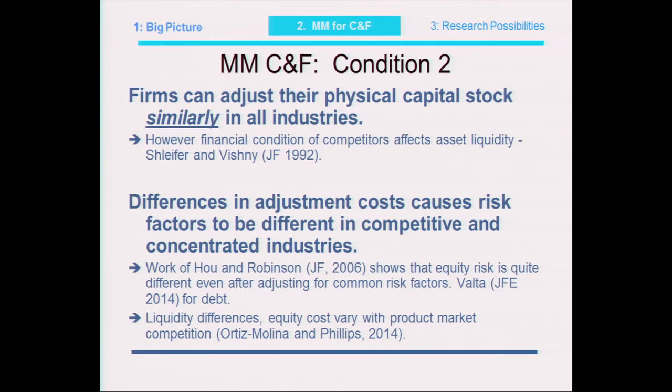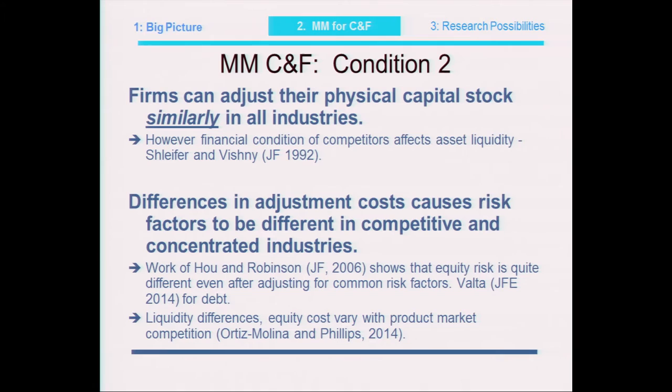If you have an active market for your assets — meaning many potential buyers — and you get into distress, equity holders will offer equity at a more reasonable rate, so your equity cost of capital will be lower. The cost of capital we use to discount cash flows is going to be dependent upon the concentration and the competitive interaction within industries.